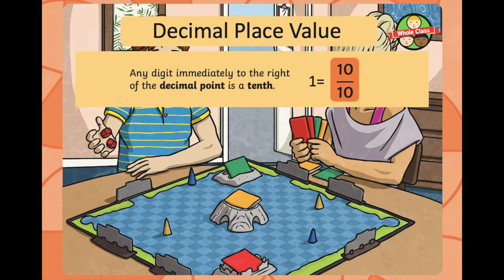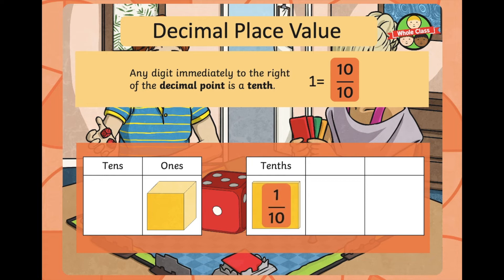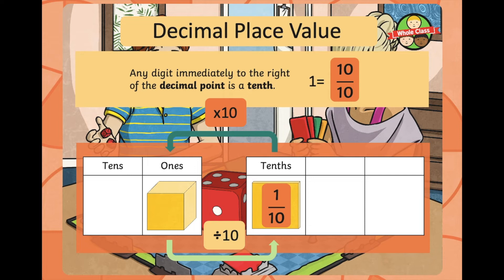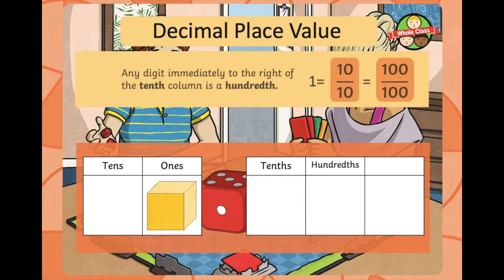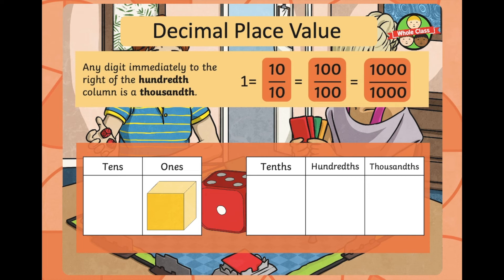Decimal place value: any digit immediately to the right of the decimal point is a tenth. So 1 equals 10 tenths. Multiply 1 tenth by 10 and you get 1; divide 1 by 10 and you get 1 tenth. Any digit immediately to the right of the tenths column is a hundredth. So 1 equals 10 tenths and 100 hundredths. One whole is equivalent to 10 tenths, 100 hundredths, and 1,000 thousandths.